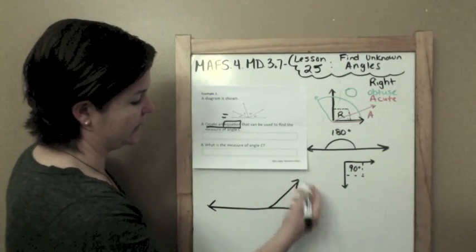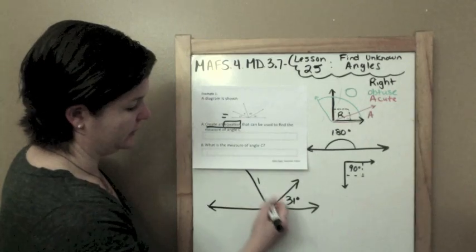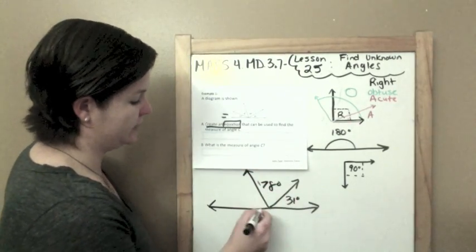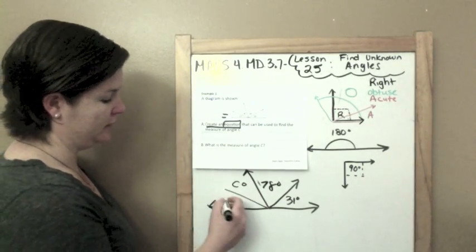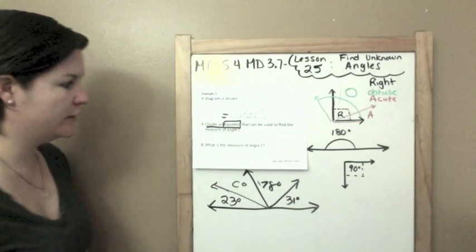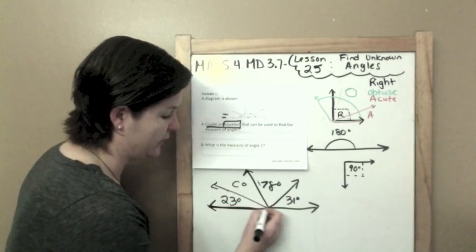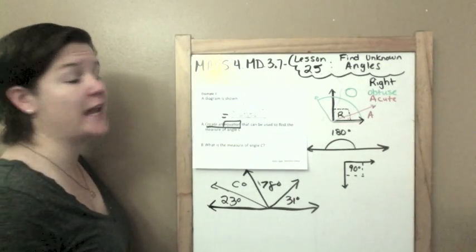All right, now this is not exact, but this is saying this is 31 degrees. This is 78 degrees. Here's C. Everybody say, hey C! We're going to figure out what your measure is.